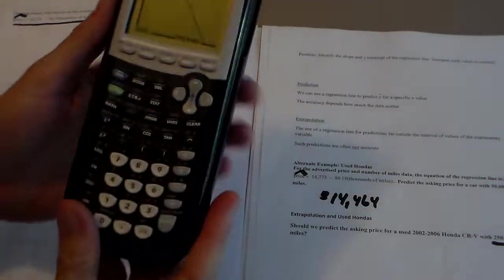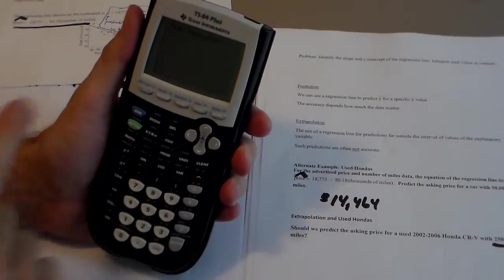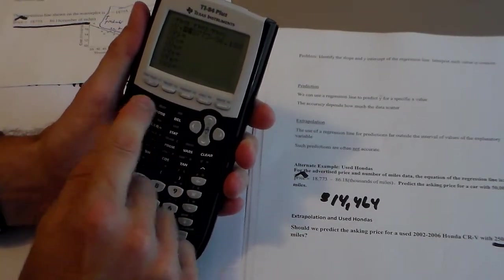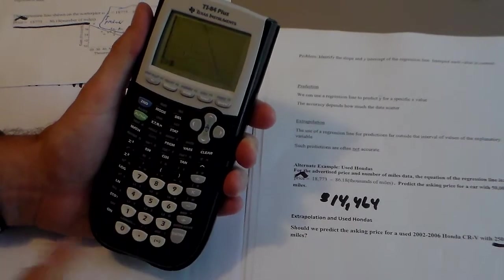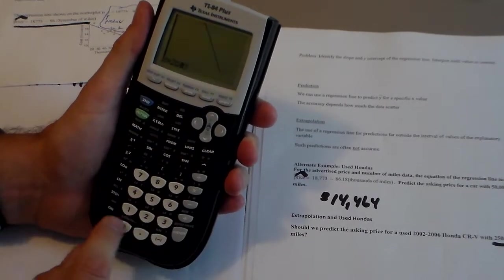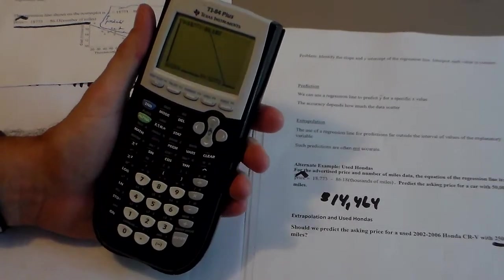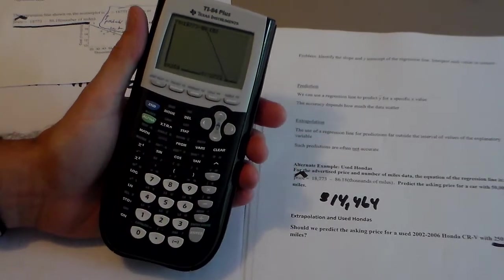Now I want to show you that we can get an answer. We can get an answer for this. I can hit second trace and hit value, and I can plug in 250, and I get an answer. And it says negative 2,772.